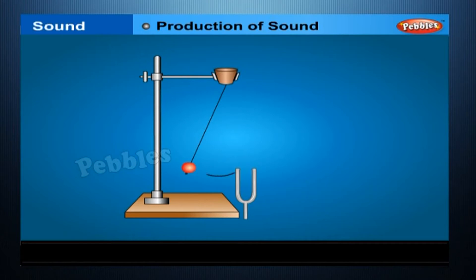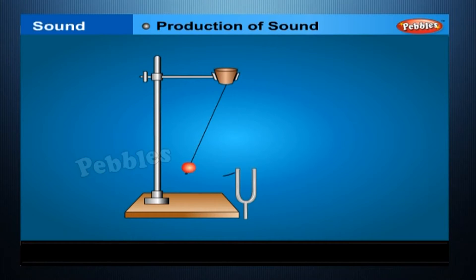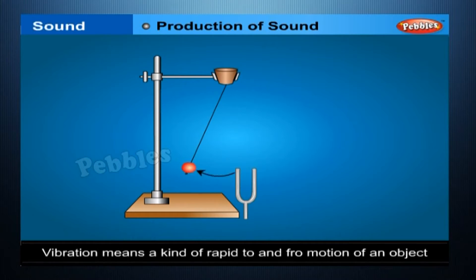In the above activities, we have produced sound by striking the tuning fork. We can also produce sound by plucking, scratching, rubbing, blowing, or shaking different objects. Vibration means a kind of rapid to and fro motion of an object.